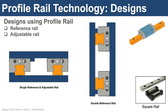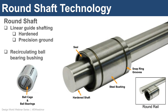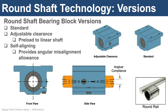Many designs are possible for assembling a parallel set of profile rails. One design has both linear rails aligned to machined reference edges. Another design has the primary reference rail mounted to a reference edge while the secondary rail is aligned to the reference rail during assembly. Round shaft technology is very similar to profile rail — it has a linear guide and a recirculating ball bearing bushing. There are several different bearing block versions: standard, adjustable clearance, and self-aligning.